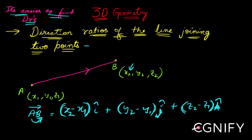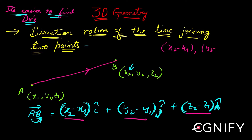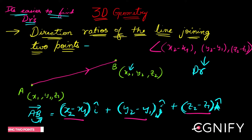These three quantities — x2 - x1, y2 - y1, and z2 - z1 — are themselves the direction ratios. So whenever you have two points with their coordinates, you simply subtract them: x2 - x1, y2 - y1, z2 - z1, and that forms your direction ratios.